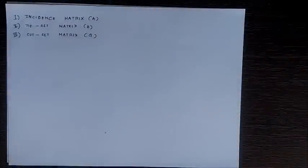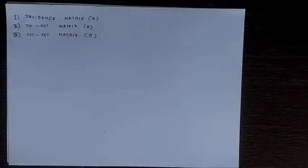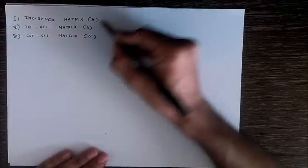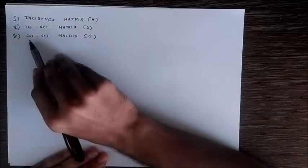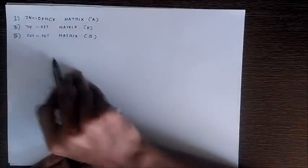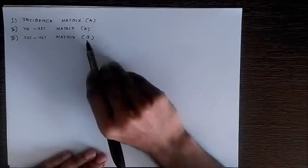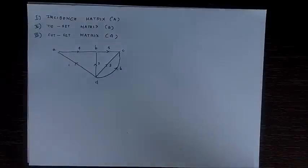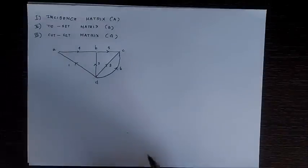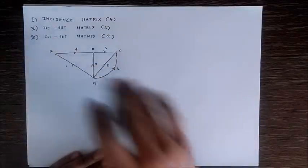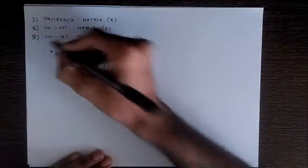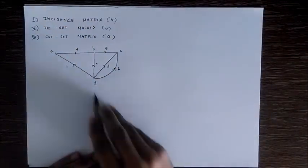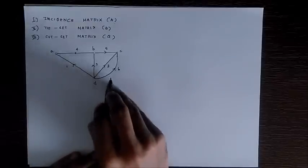Hello everyone, this is a unique tutorial. Today we are going to learn how to write the three important matrices used in graph theory: the incidence matrix represented by A, the tie-set matrix represented by B, and the cut-set matrix represented by capital Q. For understanding how to write the matrices, I'm considering a graph like this. I named the nodes A, B, C, and D, and the branches 1, 2, 3, 4.